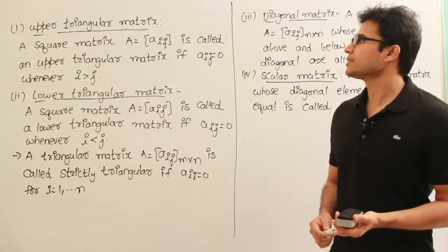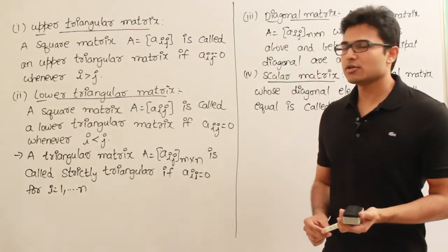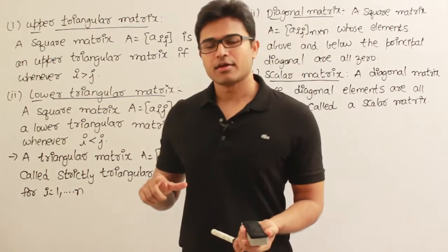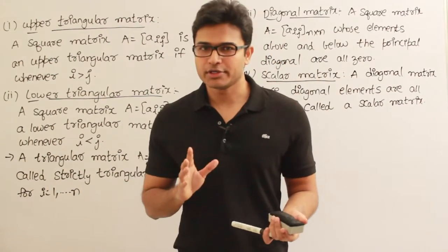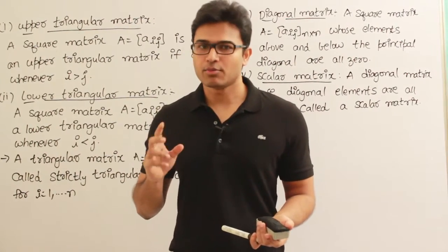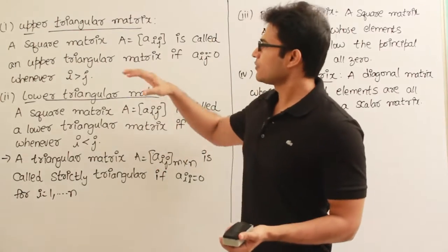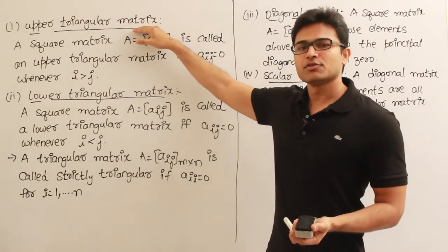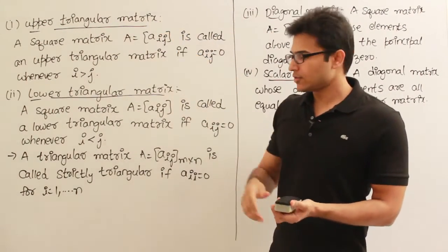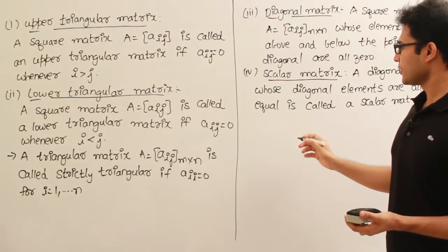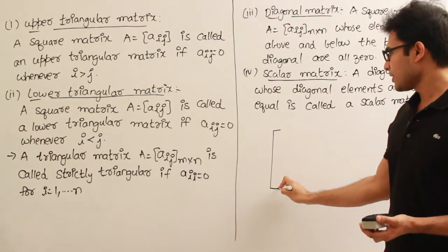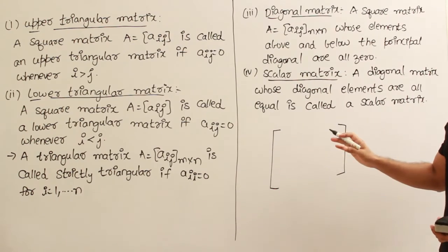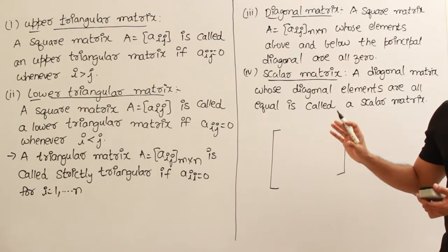There are various types of matrices and these are important later when we try to solve some equations. We shall see there how they are important. For now let's see what are the types of matrices. Some of the types are upper triangular matrix. In this video I am going to talk about only square matrices, so even if I don't mention, assume that everything is a square matrix.